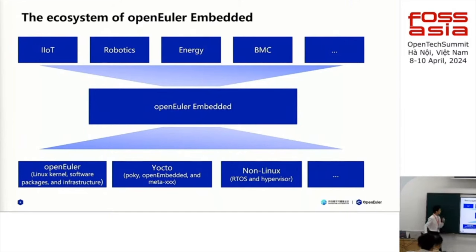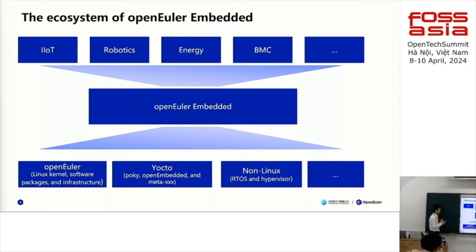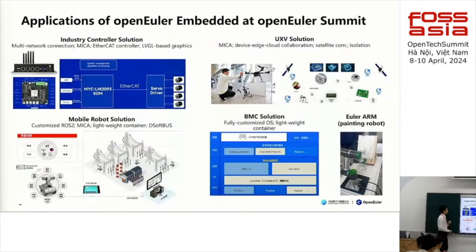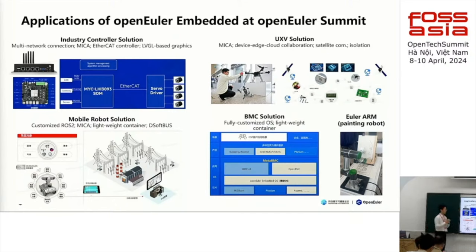Let me make a small summary of our ecosystem. OpenEuler Embedded is an open and comprehensive software platform. This includes the embedded Linux part, which gains the kernel from the OpenEuler community — the same kernel as other distributions — and uses Yocto as our build system, which is different from other distributions. We also have non-Linux parts like RTOS and Hypervisor. For applications, we support industrial IoT, robotics applications, energy industries, and BMC (Baseboard Management Controller). We have applied our OS to industry controllers, unmanned vehicles, and interesting robots — for example, at last year's OpenEuler Summit there was a painting robot that could paint a picture of you if you stood in front of its camera, and it ran OpenEuler Embedded inside.